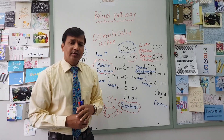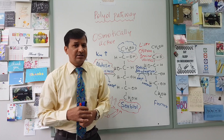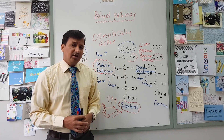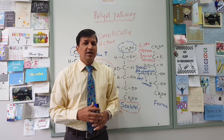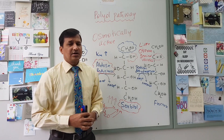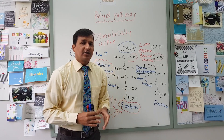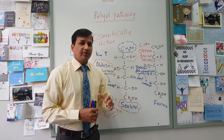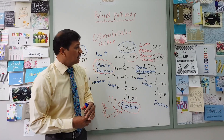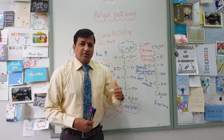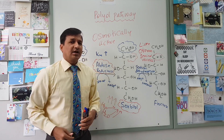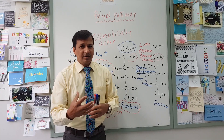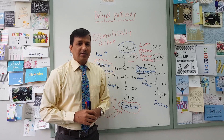This is all about the polyol pathway — explaining why we see microvascular complications in patients with uncontrolled glucose. I hope this video has helped you understand the concept. If you have not subscribed to this channel, consider subscribing as I upload videos on biochemistry concepts almost every day or alternate day. If you like the video, give a thumbs up, and put any questions in the comment section below. See you in my next video.